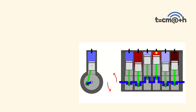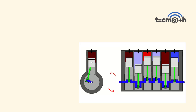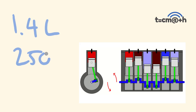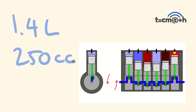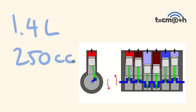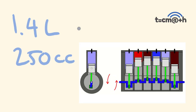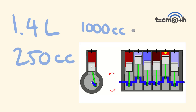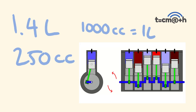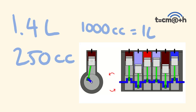Engine capacity is a volume measurement. You might have heard engine sizes talked about in terms of a 1.4 litre engine, or maybe a 250 cc engine, or even from the United States, an engine talked about in terms of cubic inches. Pretty much, these are all volume measurements. There's a thousand cubic centimetres in one litre — so 250 cc means 250 cubic centimetres. It's a volume measurement.